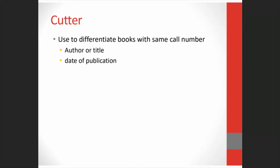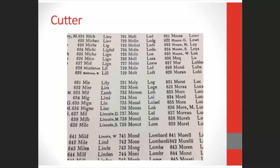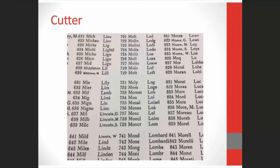Once you have your call number and a huge pile of books on a topic, how do you differentiate those books from each other? We add information to the end of the number — usually the author or the title if no author, and possibly a date of publication. This is called a cutter. It was named after Charles A. Cutter, who co-founded the American Library Association. Back in the day, you used to have to build an alphanumeric number using a table called a cutter table. But now you can use a free downloadable program from OCLC called the Dewey Cutter Program, which generates the cutter for you. Entering the name Bogart would generate B6743.